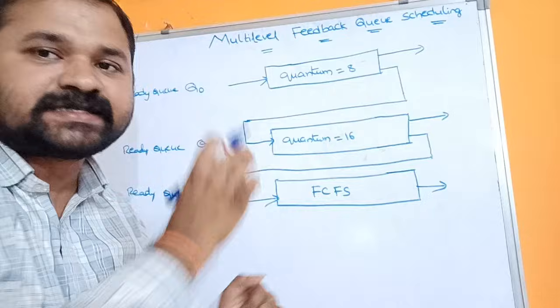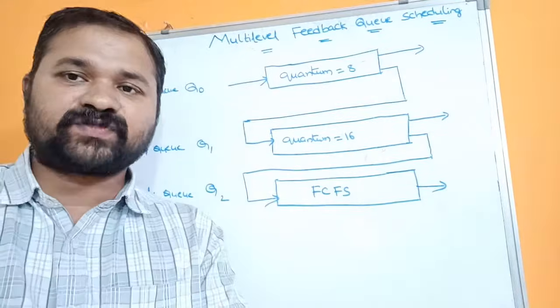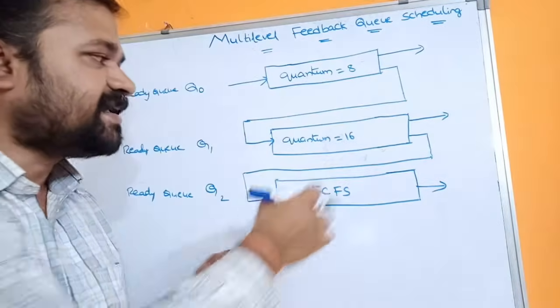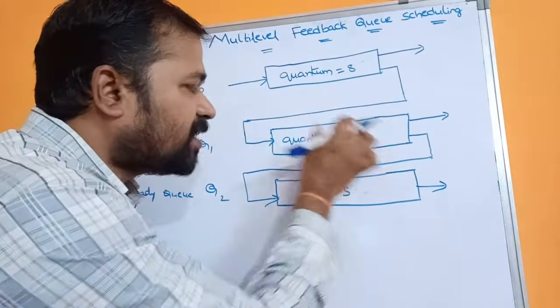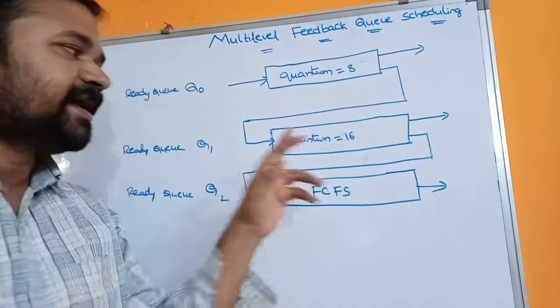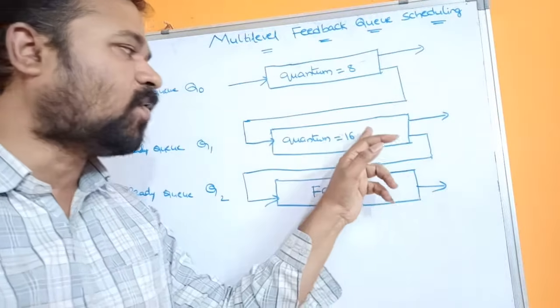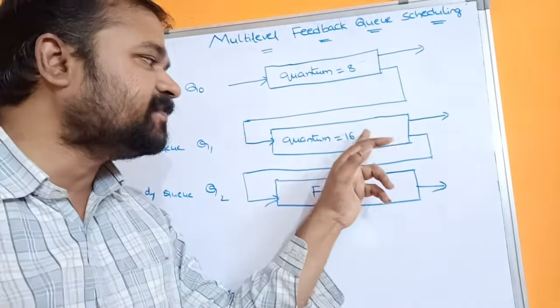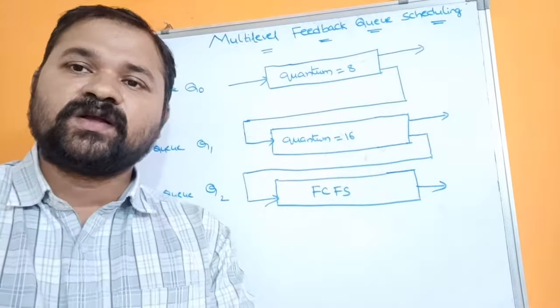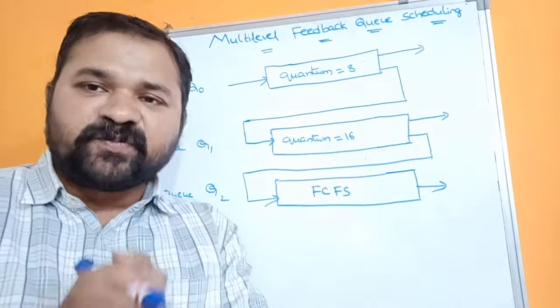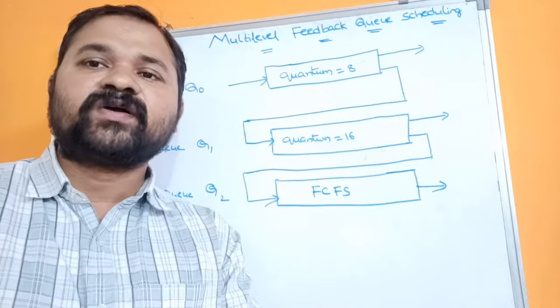For low priority processes we use FCFS scheduling algorithm. For ready queue Q0, a time quantum of 8 milliseconds is allocated, whereas for ready queue Q1, a time quantum of 16 milliseconds is allocated. Now let's see the procedure.